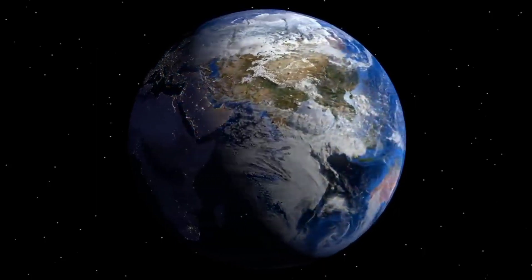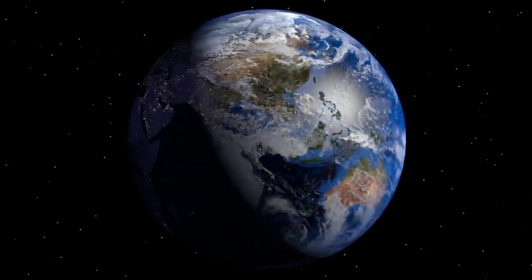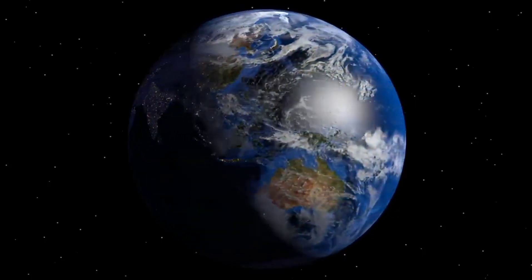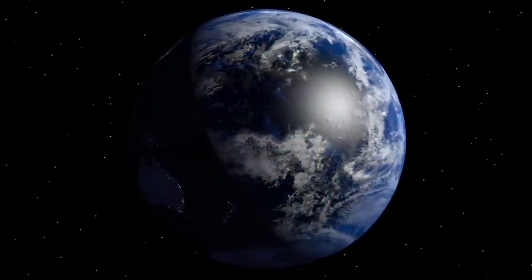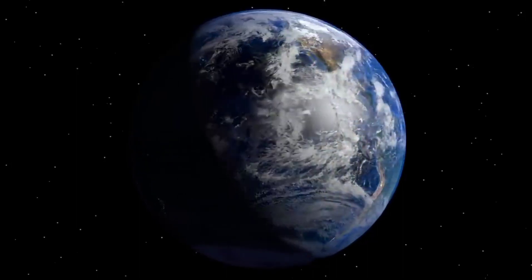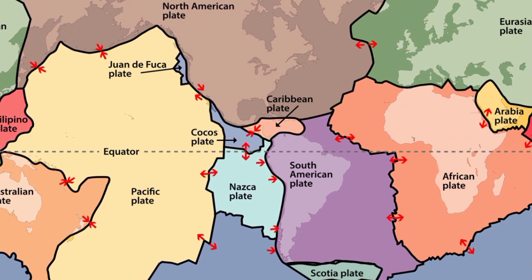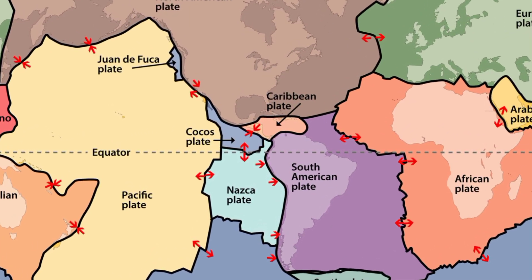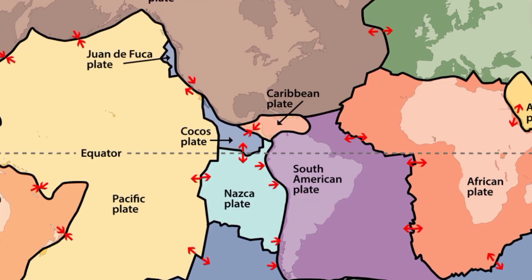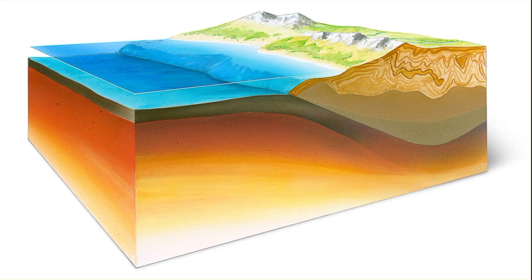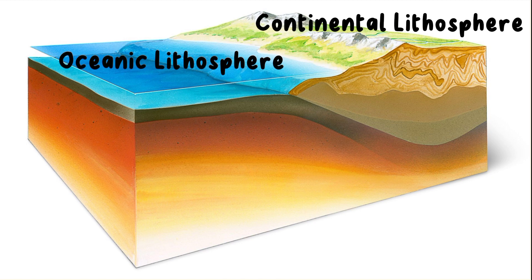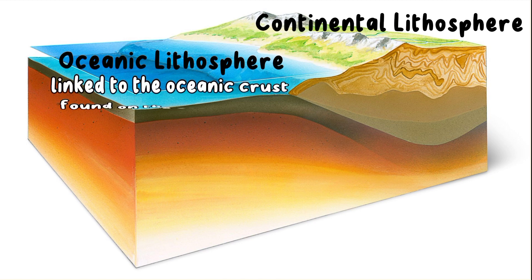The lithosphere is not as solid as you may believe — it has cracks observed both in the continents and the ocean floor. Due to these cracks, the lithosphere is broken into segments called tectonic plates. The lithosphere can be subdivided into oceanic lithosphere and continental lithosphere. The oceanic lithosphere is linked to the oceanic crust.